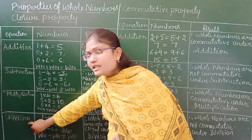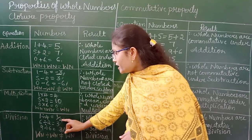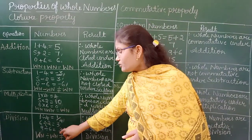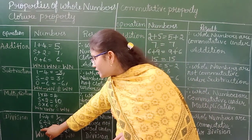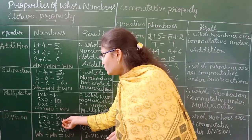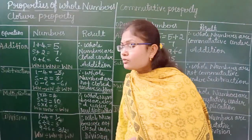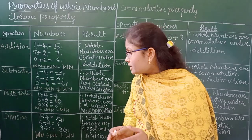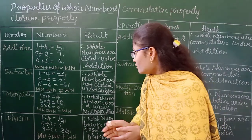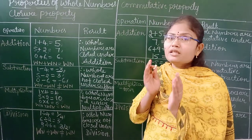Next, division. If you divide 1 by 4, the quotient is 1/4. 6 divided by 2 equals 3. 9 divided by 6 equals 3/2. The first and third results are fractional numbers, not whole numbers. So when dividing whole numbers, you may sometimes get a whole number and sometimes not. Therefore, whole numbers are not closed under division.